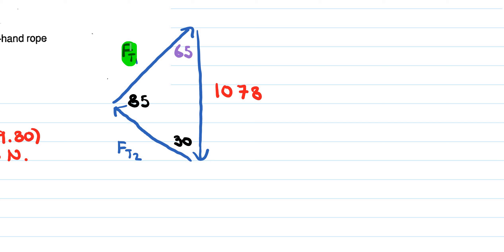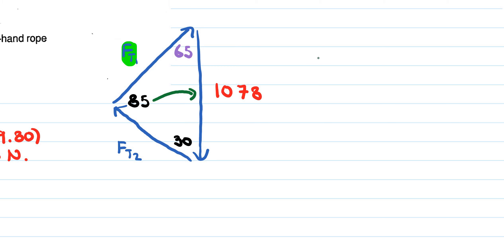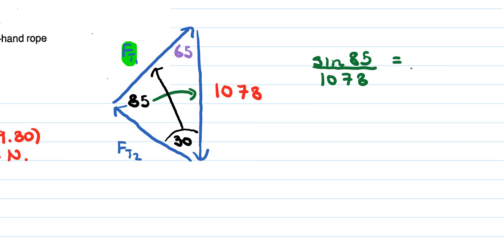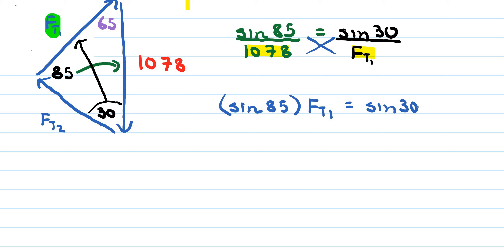Once we have 85 degrees, we find the bottom angle by taking 180 minus 65 minus 85, which gives 30 degrees. Now we have enough to find FT1. The 85-degree angle is opposite 1078, so: sine of 85 degrees divided by 1078 equals sine of 30 degrees divided by FT1.